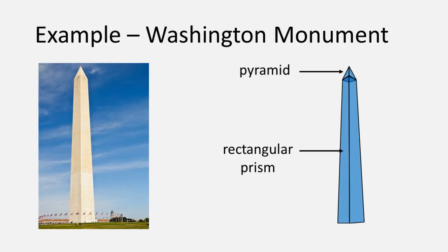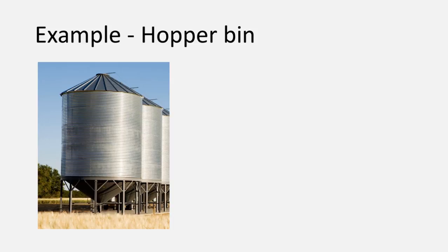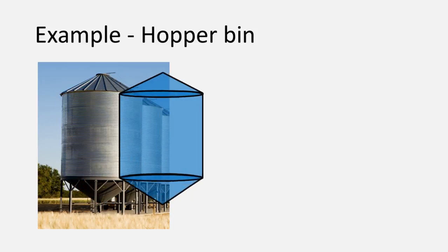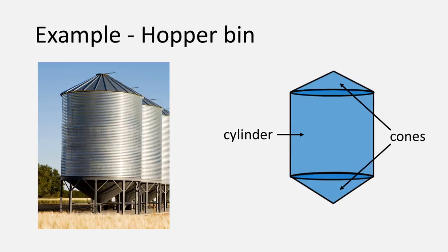Our final example is of a hopper bin. A hopper bin can actually be separated into three pieces, a cylinder with a cone attached at either end.